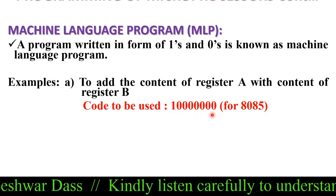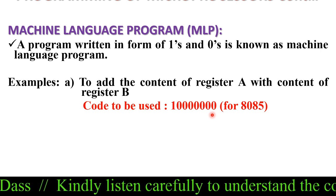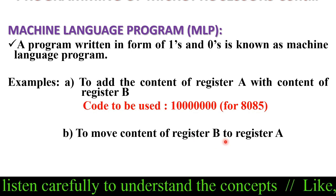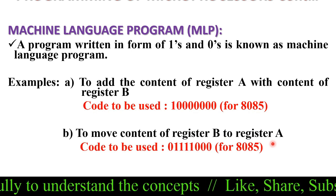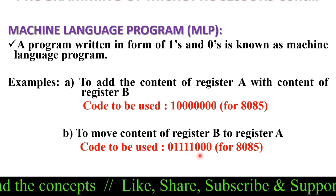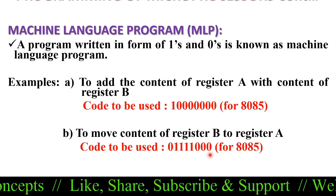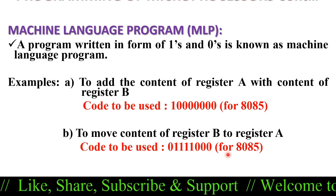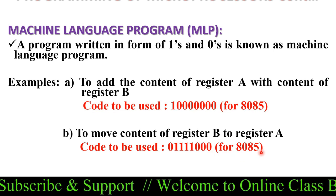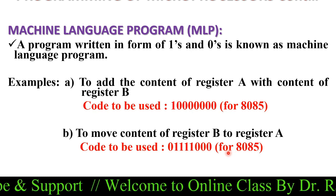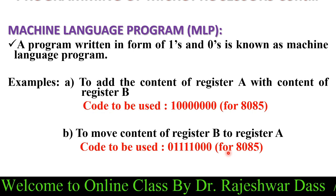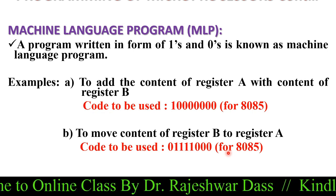If we want to move the content of register B to register A, then we use the code 01111000 for the 8085 microprocessor. These codes are specific for the type of microprocessor for which you are writing the program in machine language.